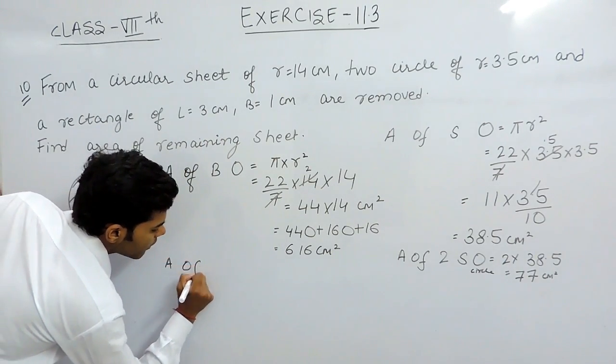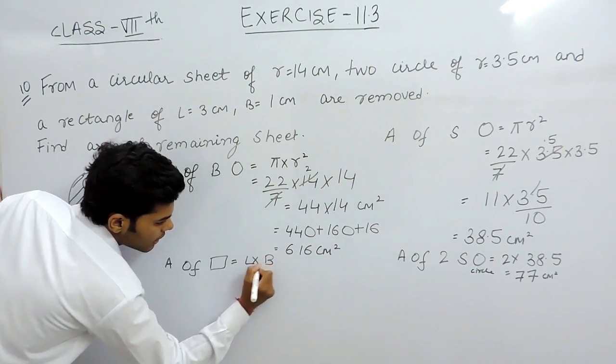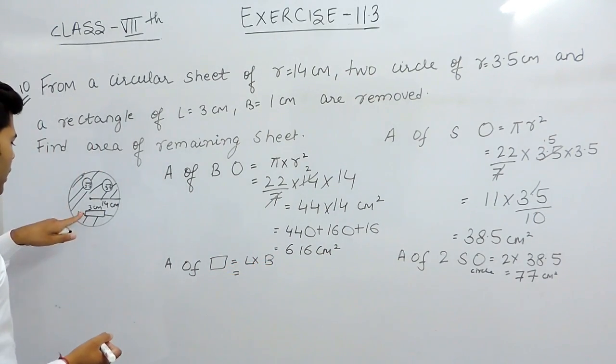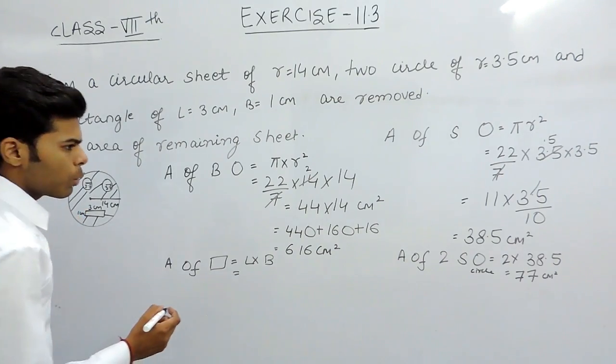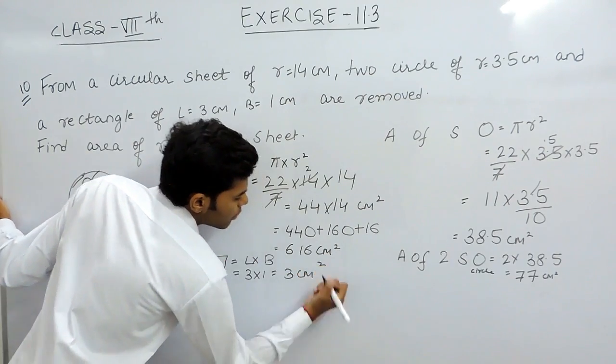Now, area of rectangle we all know is length into breadth. That will be equal to 3 multiplied with 1, which is 3 cm².